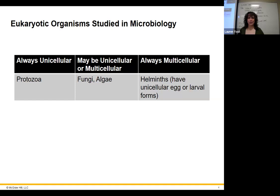Mitochondria also have two-layer membranes, like gram-negative bacteria. Now let's get into the eukaryotes and the groups of eukaryotes.